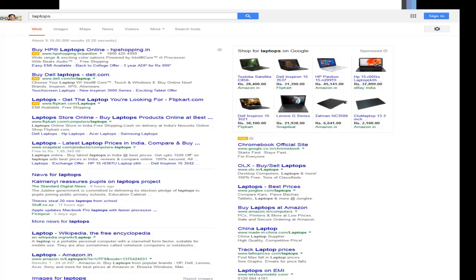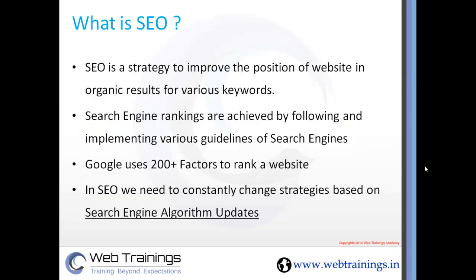In a nutshell, search engine optimization is a step-by-step procedure where we follow certain guidelines given by the search engines. It's like if I want to score good marks in an exam, I follow the guidelines given by my teacher. Similarly, in search engine ranking, we follow what Google allows and avoid what Google does not allow.